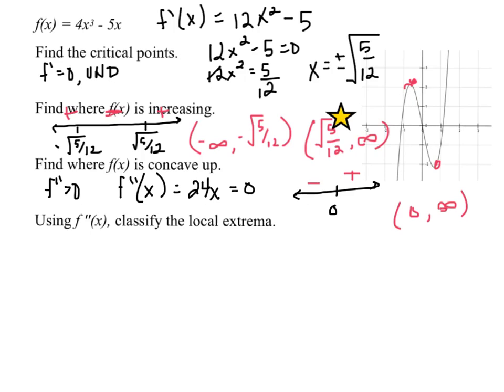One last thing — inflection points. Remember, you cannot classify an inflection point as x equals zero until you know there's a sign change. It is only an inflection point if f double prime changes signs.